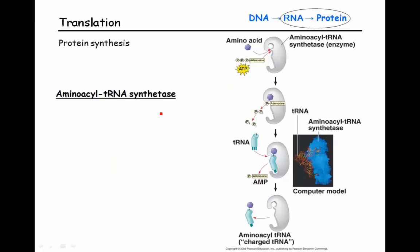We do have a specific enzyme involved in attaching amino acids to tRNAs, known as aminoacyl tRNA synthetase. Its job is to attach the amino acid to the tRNA. This enzyme has an active site that accommodates both the amino acid and the tRNA, and once it binds both of them it attaches them together. That is then what we call a charged tRNA — or an activated tRNA — a tRNA that is ready to be used for translation.